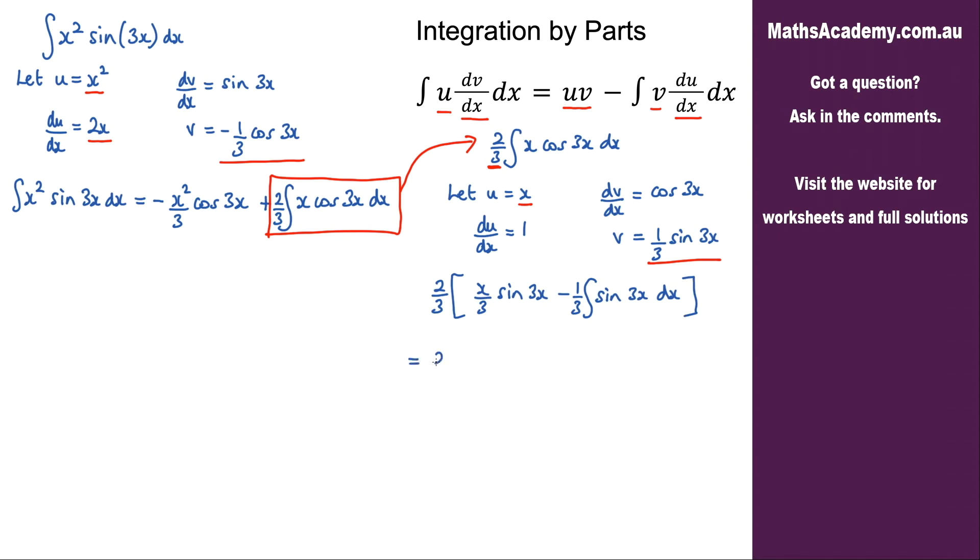So we have 2 over 3 times x over 3 sine of 3x minus the integral of sine of 3x. The integral of sine of 3x is negative cosine, and we get a third as well. The third from this integral and the third here give me 1 over 9, and the negatives give me a positive, so plus cosine of 3x. Then add the constant of integration.